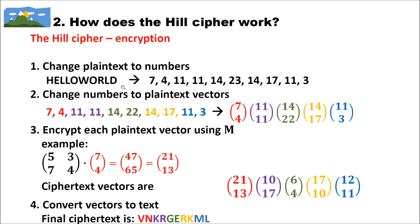In the third step, we encrypt each plaintext vector using encryption matrix M. For the vector (7, 4), we multiply matrix (5, 3, 7, 4) with vector (7, 4), getting (47, 65). With modular arithmetic, that gives (21, 13). We do this for every vector to get five ciphertext vectors. In the final step, we convert the vectors back to text: 21 becomes V, 13 becomes N, and so on. The final ciphertext is VNKRGERRKML.